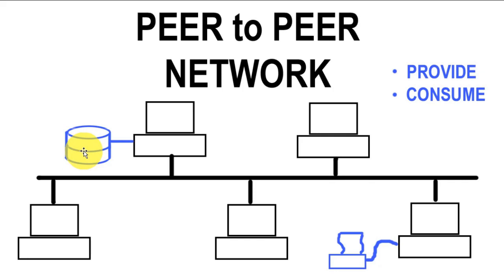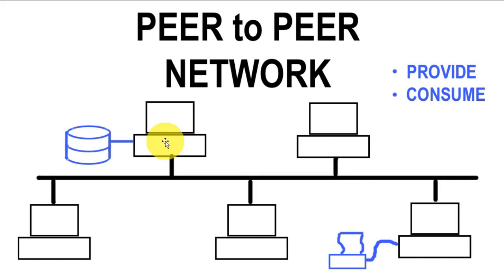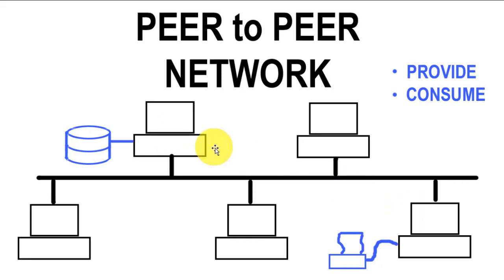In this situation, you have hosts that both provide and consume network services. These two hosts provide a network service — one provides printing, the other provides storage. At the same time, these hosts also consume services. For instance, this host prints to that workstation, and this workstation saves files to the hard drive on that workstation. In essence, they function both as a client and as a server at the same time.